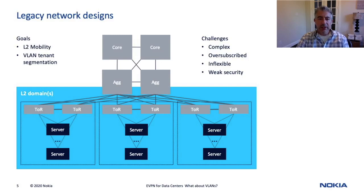Those of us that operated these networks know all too well the drawbacks of these designs: the complexity of design, the complexity of troubleshooting multiple protocols like spanning tree, MLAG, and VRRP. And then there also was a weak security model — a common routing table for all of the routes, VLANs for layer two separation which could easily be spoofed or just misconfigured.